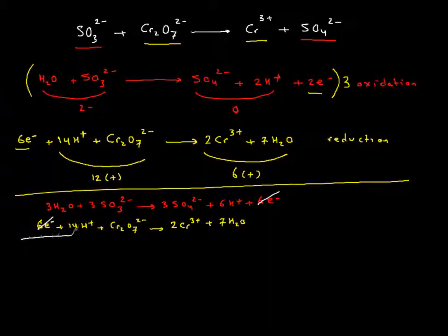Cancel your electrons, bring everything down. If you need to simplify in terms of hydrogen and H2O, we do so. 3 H2Os plus 3 sulfite plus 14 H+ from the second reaction plus Cr2O7^2-.